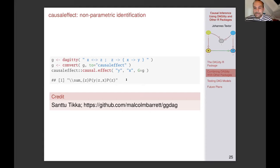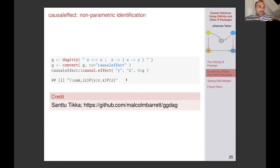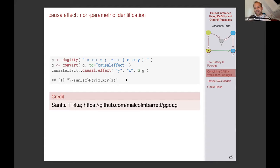There's a question from Anne: you mentioned you can work with FCI algorithm output in Daggity — does this mean the package provides tools for working with PAGs? Yes. For example, you can compute adjustment sets for PAGs using the adjustment set function on PAGs. You can also read the d-separation constraints of PAGs. PAGs are generally supported, not in all functions — for example, I don't have an algorithm that finds an instrumental variable in a PAG, because I think that might be an open research question. But some functionality does support PAGs.